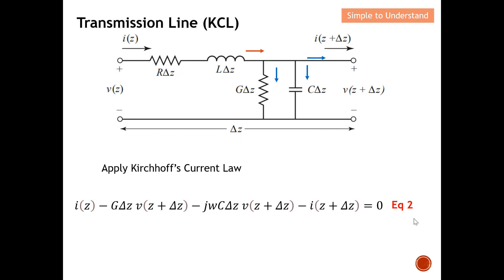I'll probably need another video to further explain why we derive these KVL and KCL equations and what we want to achieve with them. For a quick conclusion: in order to use lumped elements and apply KVL and KCL, I need to take a very short section of the transmission line whose length is comparable to — or significantly smaller than — the wavelength of the electromagnetic wave propagated along the transmission line.